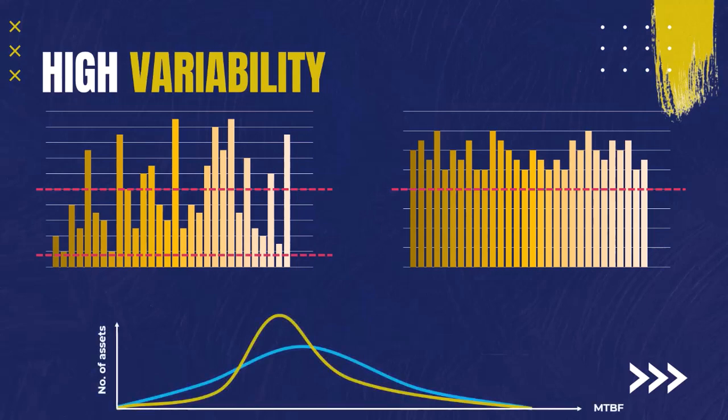Here we can see a failure density distribution for the components on both systems. The blue curve represents a system with high variability. In the third pillar of this course, we will discuss in detail what failure density means and how to plot such graphs.